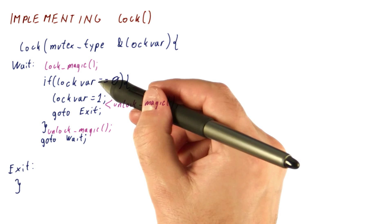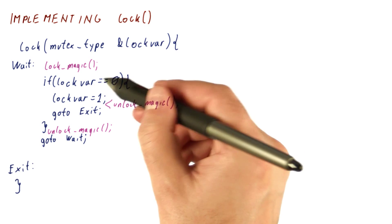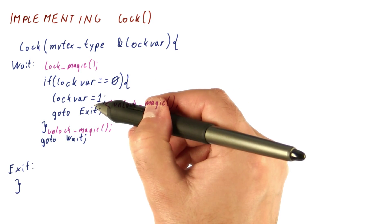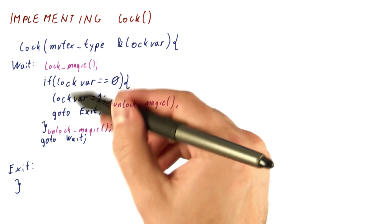So basically, we're just trying to do this check, and if it's zero, setting it to one atomically with each other using some sort of magic.